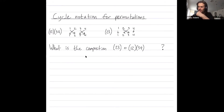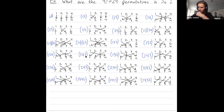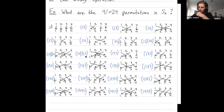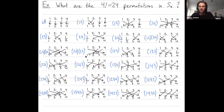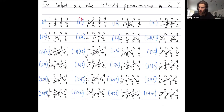Let me explain where these names come from. We've listed here all 24 permutations in the symmetric group on four elements. When you write something down as a cycle, like (1 2), it's saying that one goes to two, and then since it's a cycle, two goes back to one. I haven't written three or four in this notation, and that just means three and four are fixed.